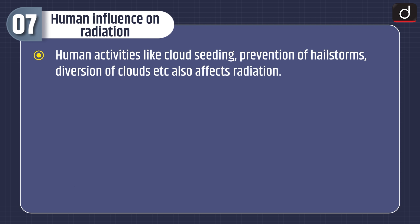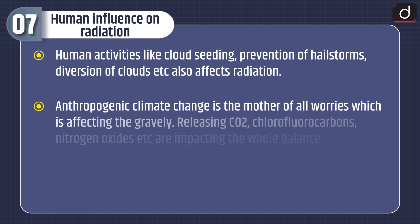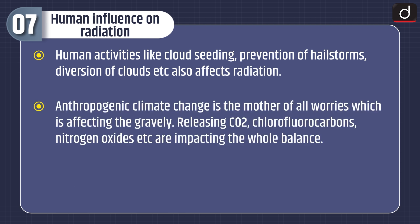Human activities like cloud seeding, prevention of hailstorms, and diversion of clouds also affect radiation. Anthropogenic climate change is the mother of all worries, gravely affecting the radiation balance by releasing CO2, chlorofluorocarbons, nitrogen oxides, etc., which are impacting the whole balance.